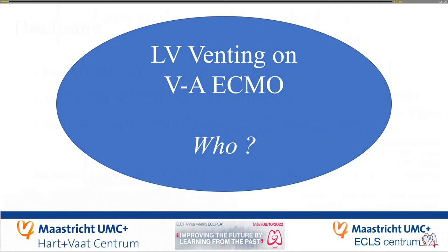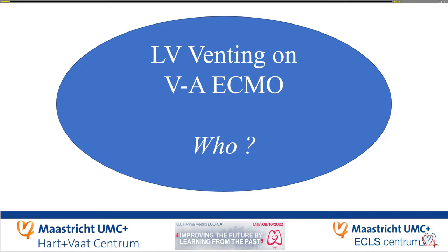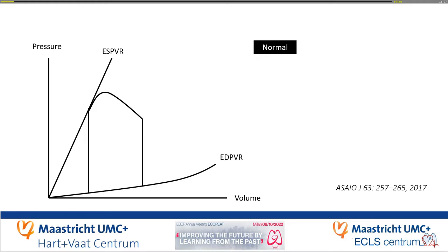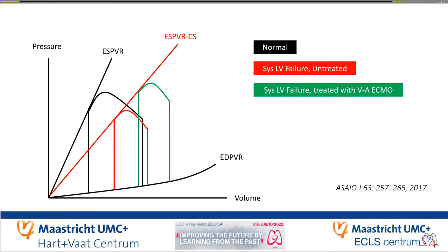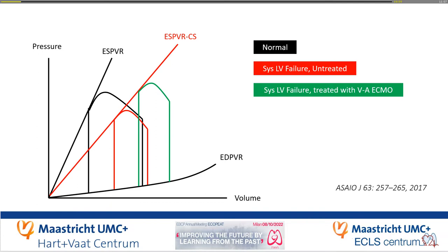First of all, the question — actually more: who is the patient? These are the famous pressure-volume loops. This is a normal state; the pressure-volume area represents the stroke work, and all the work done by the ventricle with the pressure rise and then ejection, then diastole. When you have heart failure, you have reduced stroke work, reduced volume, and also increased diastolic pressure. But we know that with VA-ECMO, this goes even worse. There is now a famous statement: VA-ECMO is a circulatory support, but not a ventricular support.